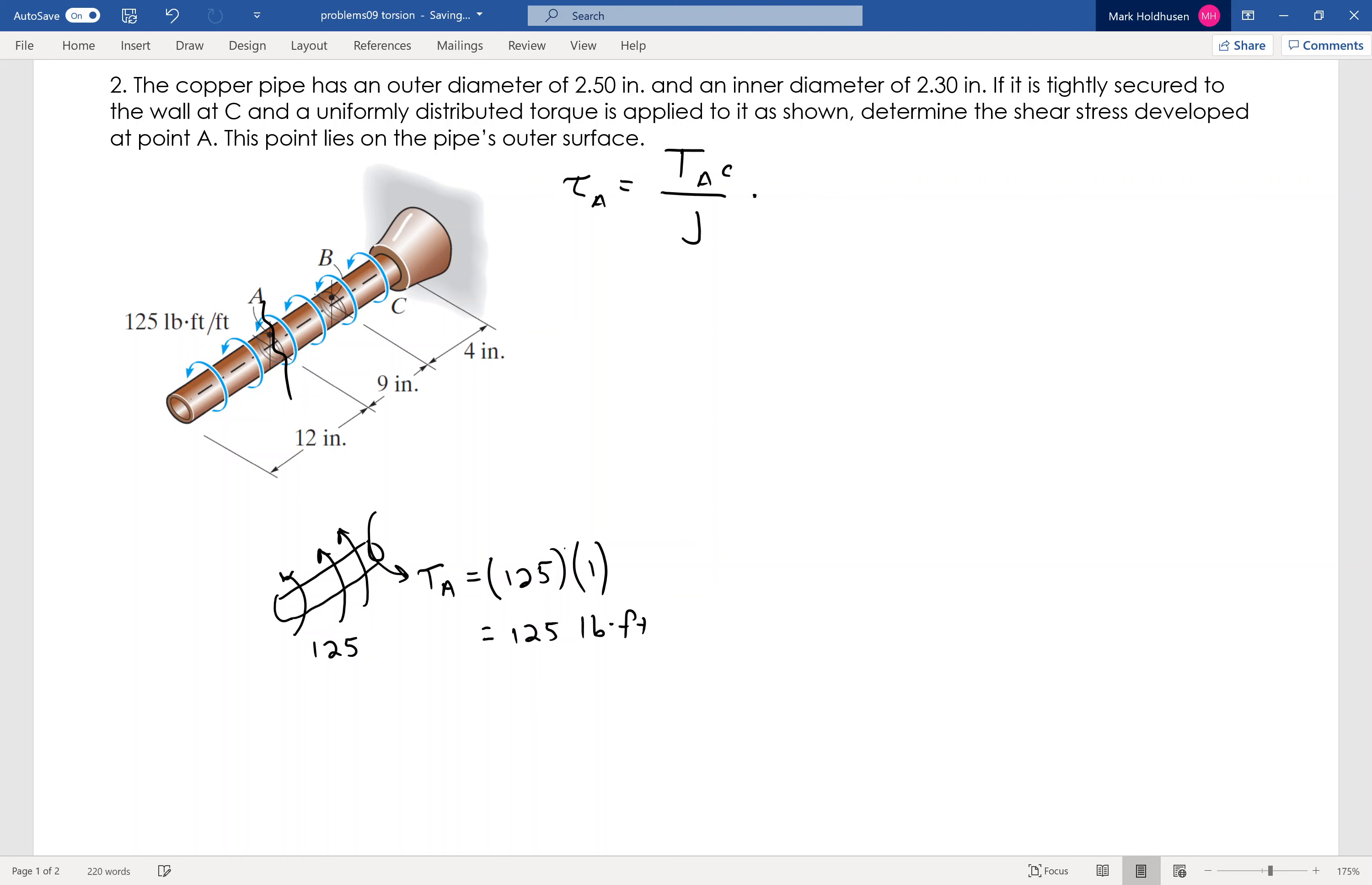However, I want to do everything in inches because both C and J are going to depend on inches, and I want my answer to be in pounds per square inch. So I'm going to take that times 12 inches per foot, and the torque is going to be 1500 pound-inches instead.